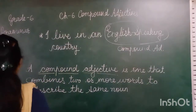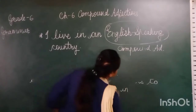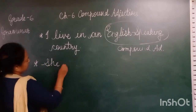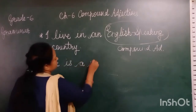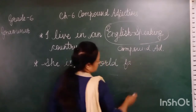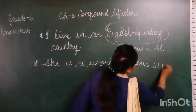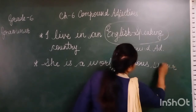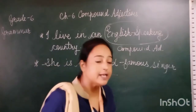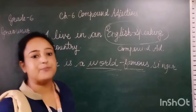One more sentence: 'She is a world-famous singer.' She is a singer, but which type of singer is she? She is world-famous. So 'world-famous' is a compound adjective here, describing the noun 'singer.'